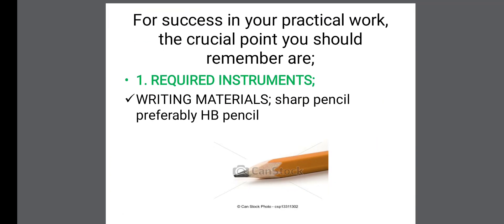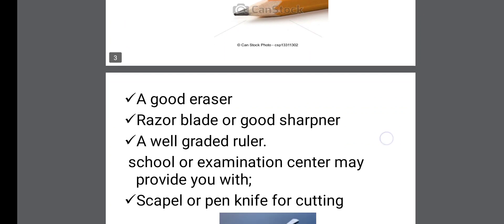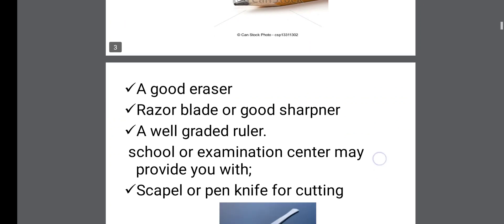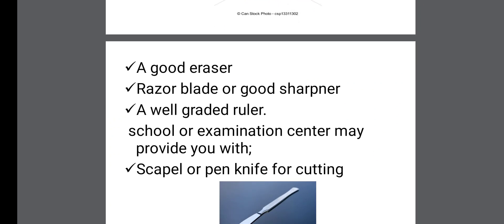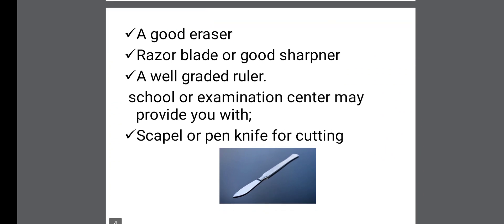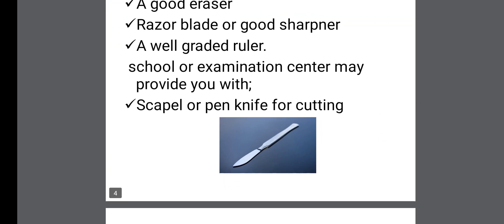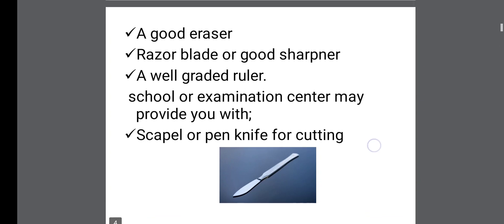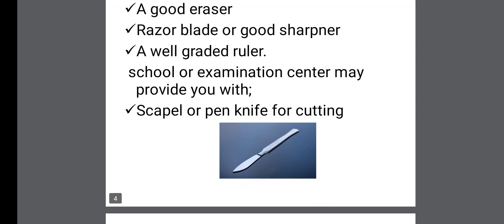Writing materials should include a sharp pencil, preferably HB pencil, a very good eraser to make your work very neat, a razor blade or a good sharpener as a backup whenever your sharp pencil breaks, and a well-graded ruler. All these are what you actually need to come with to the exam hall.